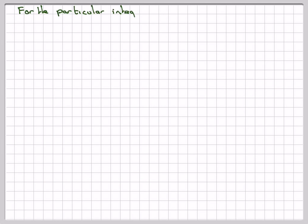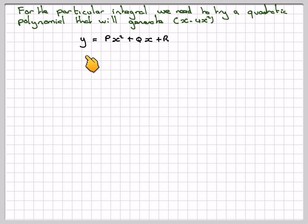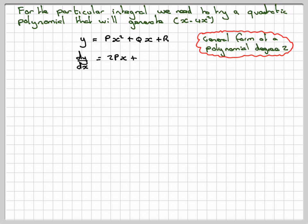For the particular integral, we need to try the quadratic polynomial that will generate x minus 4x squared. So the general polynomial we're going to try is y is equal to px squared plus qx plus r. This is the general form of a polynomial degree 2. dy/dx will be if you differentiate 2px plus q, differentiating each term here.